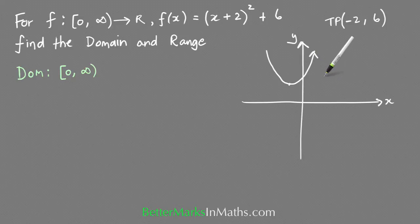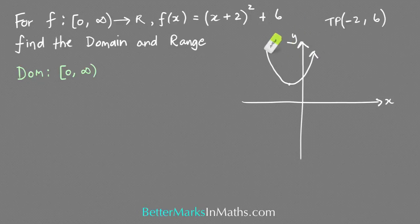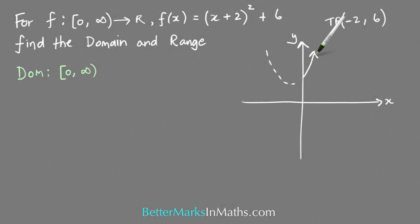Now looking at the domain: from x = 0, which is here, to infinity — so you only want the part on the right-hand side. I'm going to dot out the other part that you don't need, and that's the part of the graph that you want.